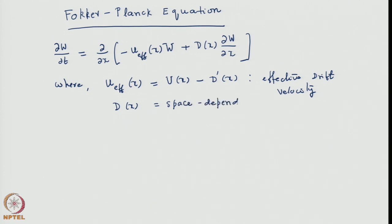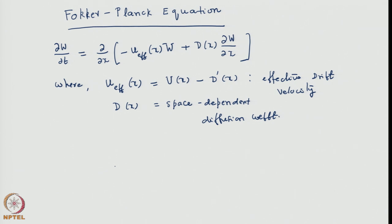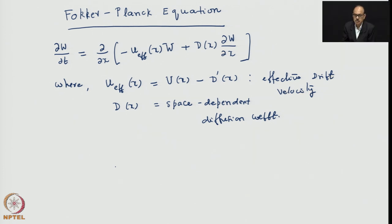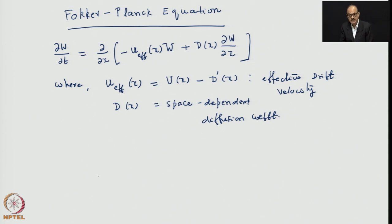Just to point out: the true or effective drift does include the derivative of the diffusion coefficient if the diffusion coefficient is space-dependent. This is sometimes very useful when we discuss mass transfer in turbulent fluids, where near a wall or boundary the diffusion coefficient in the medium could vary from point to point.